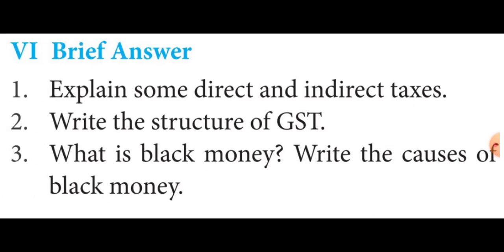For Roman numeral 6, brief answers: questions one and two already given. The third question — what is black money and write the causes — refer to page 325: black money heading first paragraph fully, then causes of black money heading fully up to tax structure, marking all five points. All question answers must be learned, written in a rough note, and a parent signature obtained. The next class will cover a new lesson. Thank you students.